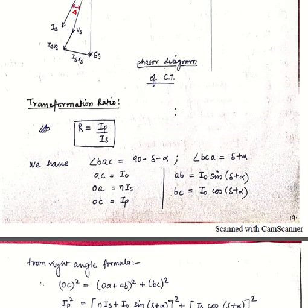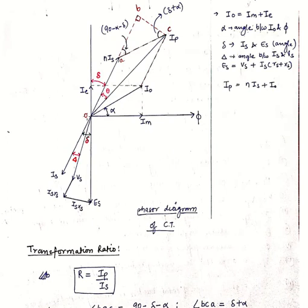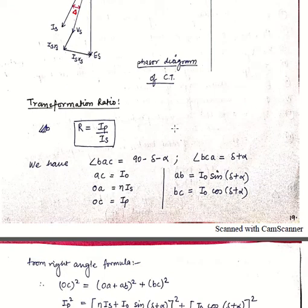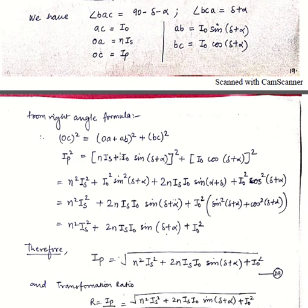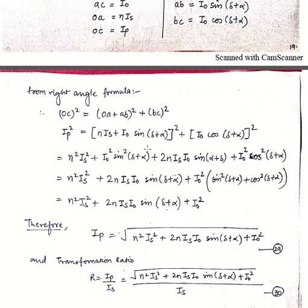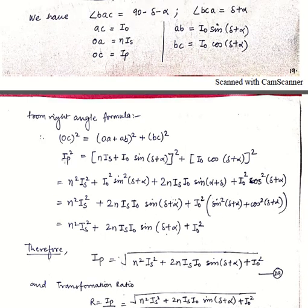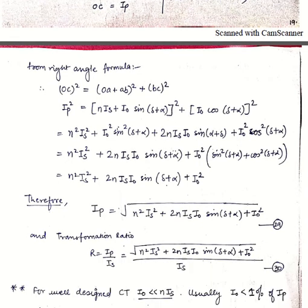From the right-angle formula, OC² equals OB² plus BC². If we divide the OB part as OA plus AB we get: OC² equals (OA + AB)² plus BC². Substituting our values: I_p² equals (N*I_s + I0*sin(delta + alpha))² plus (I0*cos(delta + alpha))². If we expand this square bracket, we get N²*I_s² plus I0²*sin²(delta + alpha) plus 2*N*I_s*I0*sin(delta + alpha) plus I0²*cos²(delta + alpha).